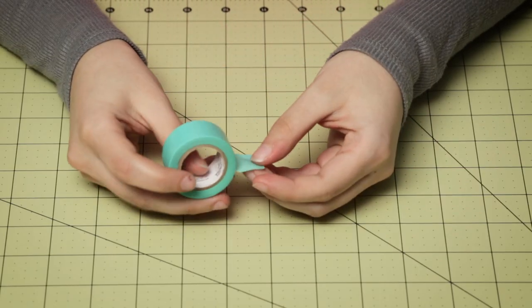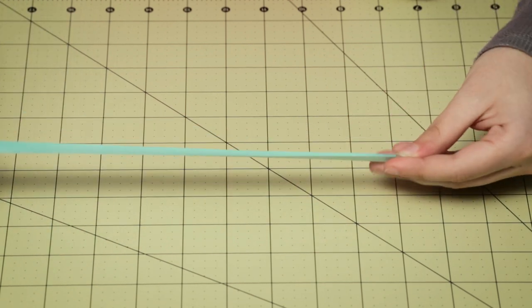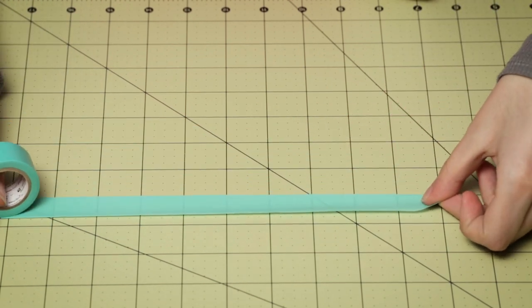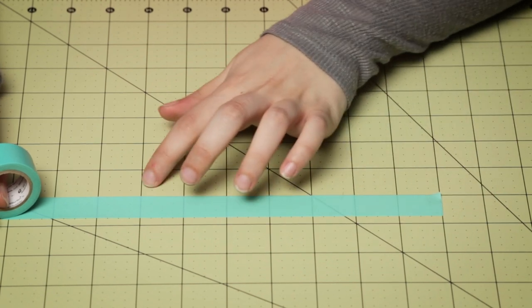Okay, so the first thing we're going to do is take our washi tape and we're going to peel out a strip that is 9 inches long. One, two, three, four, five, six, seven, eight, nine.